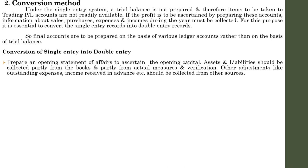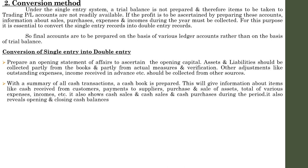We will discuss in detail how to identify each individual item during the practical cases. Second step: with a summary of all cash transactions, a cash book is prepared. Since almost all cash transactions are recorded, we can easily prepare a cash book. This is the first and foremost important ledger we are going to prepare. From the cash book, we get information about cash received from customers, payments to suppliers, purchase and sale of assets, and totals of various expenses and incomes.